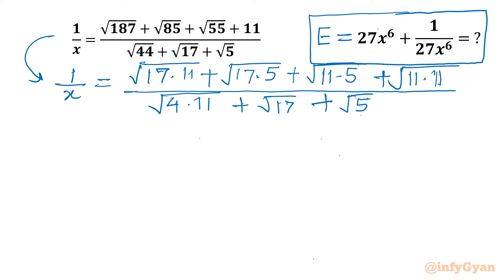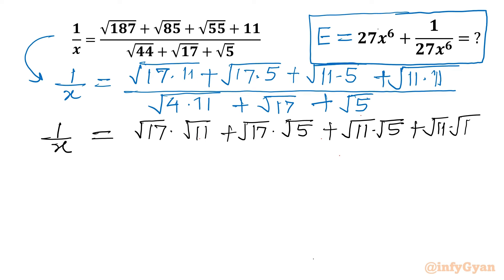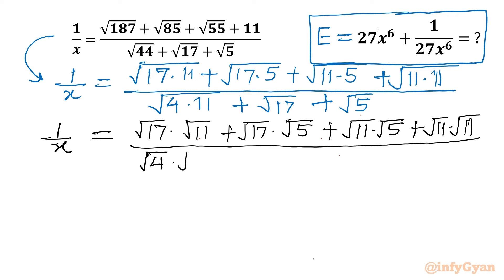Now I will split radicals. So I can write 1 over x equal to root 17 times root 11, plus root 17 times root 5, plus root 11 times root 5, plus root 11 times root 11, using properties of radicals. The denominator I can write as root 4 times root 11, plus root 17 plus root 5.